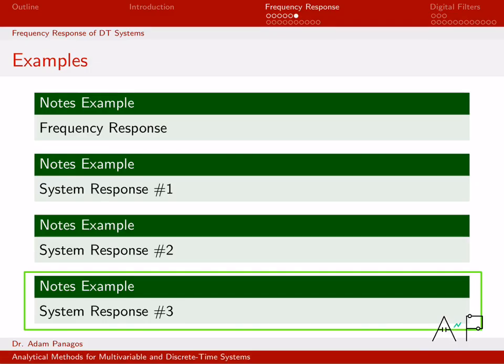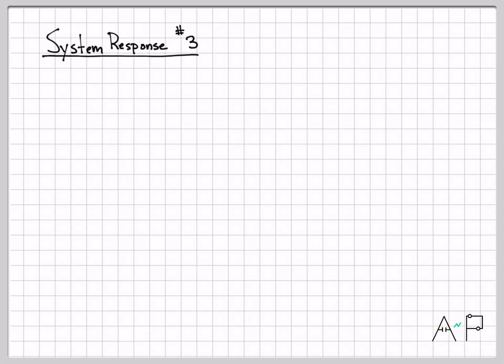And then one more quick example, system response number three. Let's mix things up just a little bit. Let's say we actually start off with a continuous time signal. X of t is cosine of 1500 t.